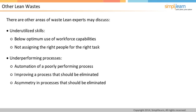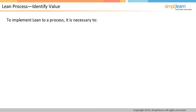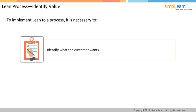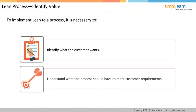To implement Lean to a process, it is important to find out what the customer wants. Once this is done, the process should be evaluated to identify what it needs to possess to meet customer requirements. The next step of the Lean process is value stream mapping.